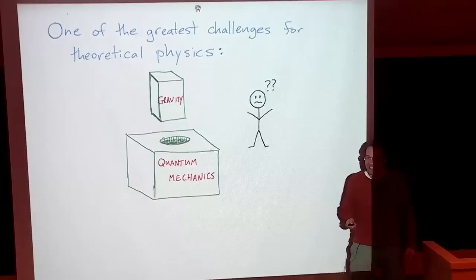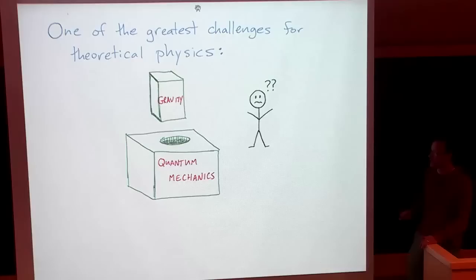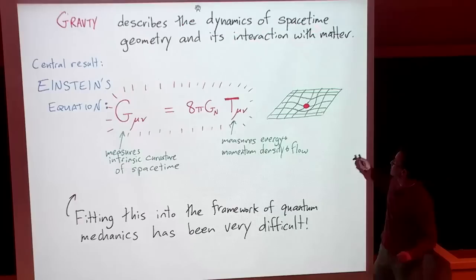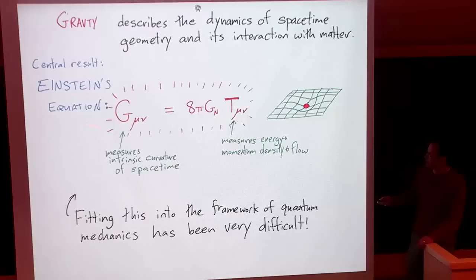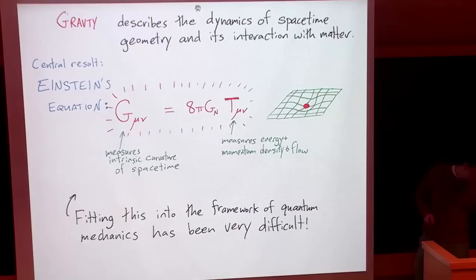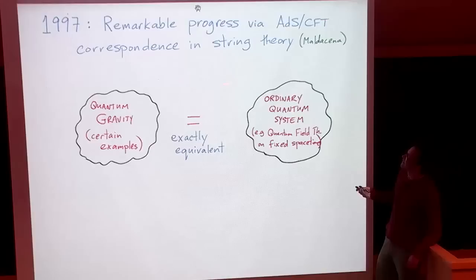Let's start basic. This has been, over the past decades, one of the big challenges in theoretical physics: trying to fit the theory of gravity into the framework of quantum mechanics. When we're talking about gravity, the thing to keep in mind is that we're talking about geometry — the dynamics of spacetime and its interaction with matter. This came from Einstein. We're trying to fit this picture within the framework of quantum mechanics, where different quantum states would describe different geometries. This has been a difficult problem.